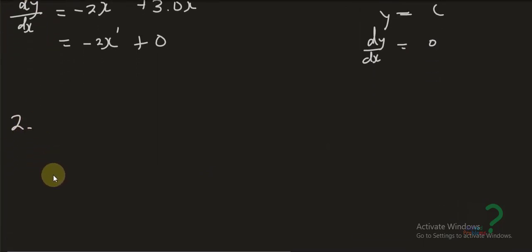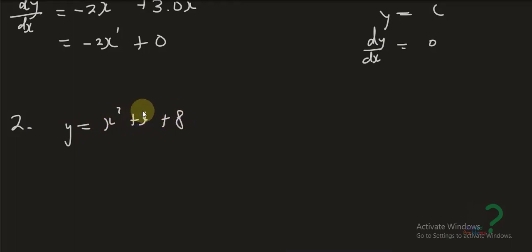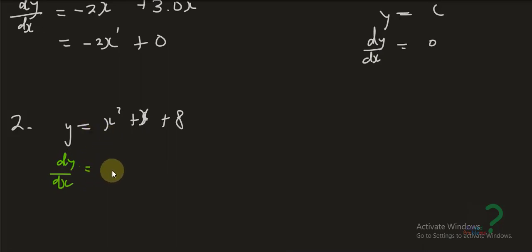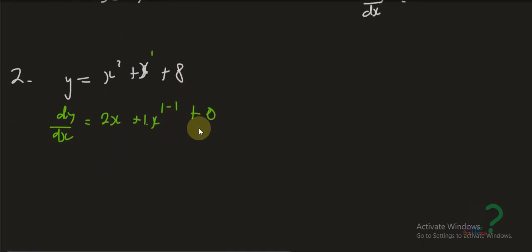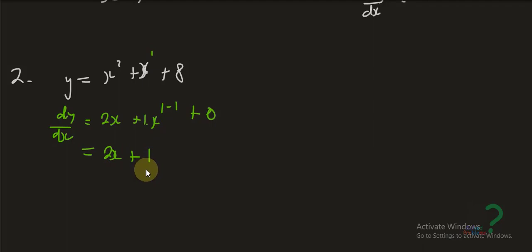Example two: y equals x squared plus x plus 8. The derivative dy over dx is going to be 2x plus 1 times x to power 1 minus 1, plus zero because 8 is a constant. That simplifies to 2x plus 1.